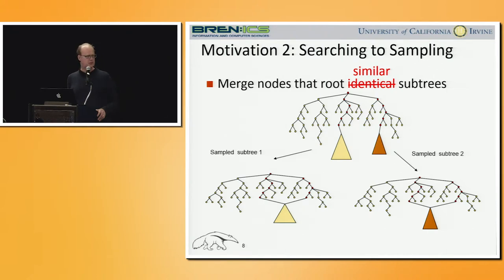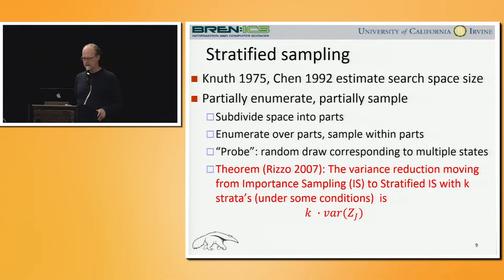From the search perspective, by similar we mean things like subtrees that are identical or conditioned sub-problems that are similar. From the sampling perspective, we talk about similarity in terms of statistical notions — we may want variations between abstractions to be as large as possible, and variations within each abstraction to be as small as possible. Our approach is related to and generalizes stratified sampling, where the idea is to split the population into a number of strata and sample within each stratum, and it can be shown that this reduces the variance of the estimator.